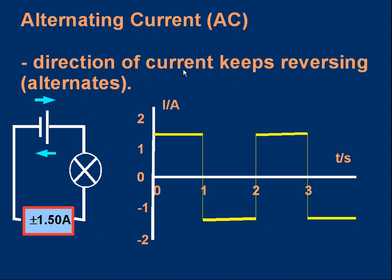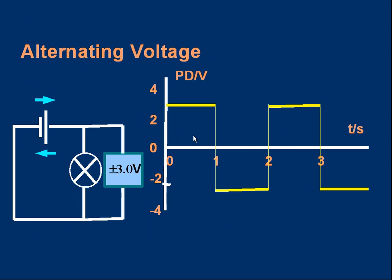I could produce a crude version of alternating current with this circuit by repeatedly flipping the cell — reversing the polarity, reversing the plus and minus. Suppose we start with it one way around for a second: the current stays at 1.5 amps. If I quickly reverse it, the current drops and becomes minus 1.5 amps. I keep it like that for another second, then flip back to plus 1.5 amps, then to minus 1.5 amps — a crude alternating current where the direction keeps reversing.